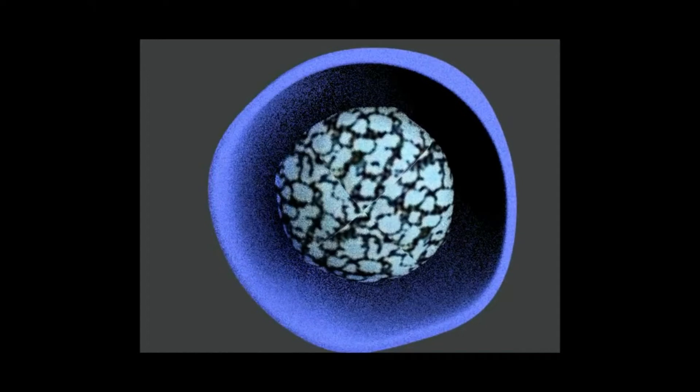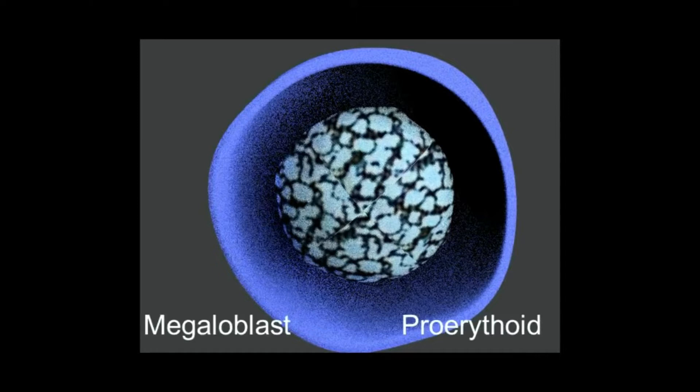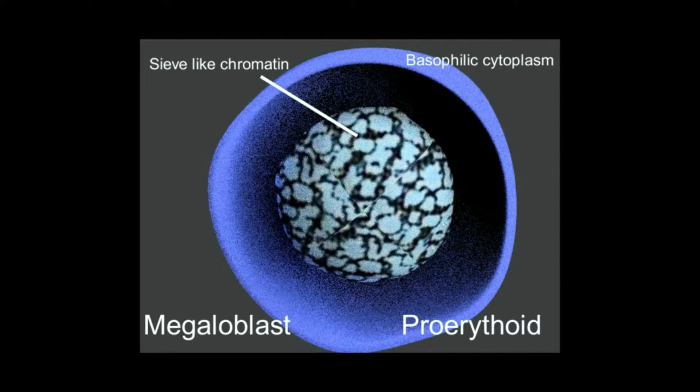Megaloblastic anemias result most often from deficiencies of vitamin B12 and folate. Both vitamin B12 and folate are important for formation of nucleic acid and thus nucleus maturation. Deficiencies of these two lead to abnormal cells with immature nucleus resulting from defective DNA synthesis, but the RNA synthesis continues resulting in a large cell with a large nucleus.